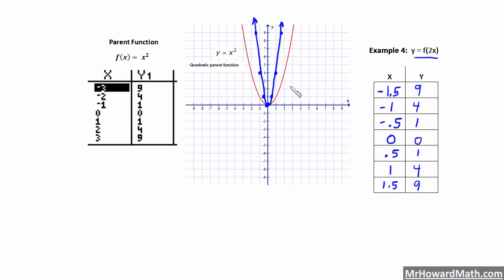We've taken all of these points — for example, we were at positive 2.4 on our original graph, and we took that point and horizontally compressed it. We kept the y coordinates the same and squished or compressed this point inward, along with its corresponding point at negative 2.4. It's like grabbing the parabola and pushing it inward with our hands, compressing it in the x direction. The resulting graph is a skinnier parabola. Let's move on to the next example.